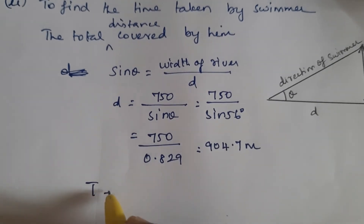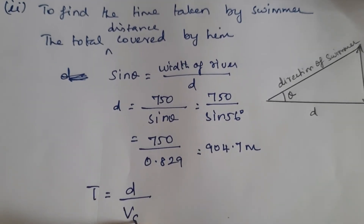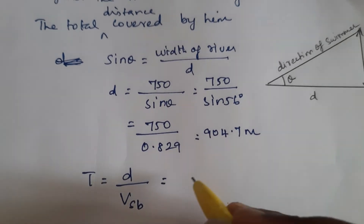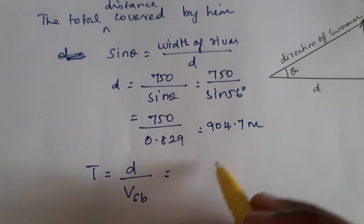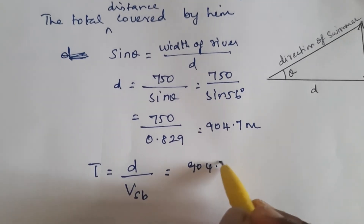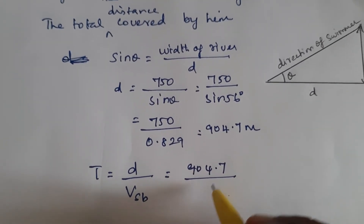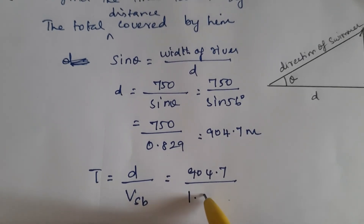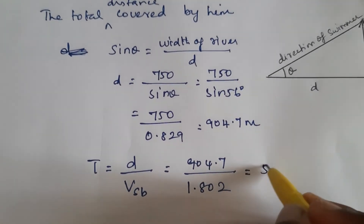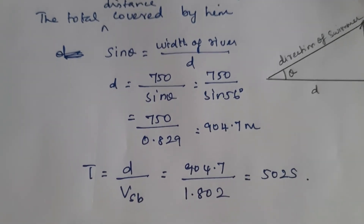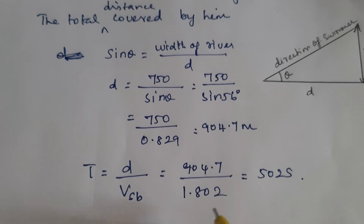Now we find the time. Time = distance / velocity of swimmer with respect to bank = 904.7 / 1.802 = 502 seconds. This is the time taken by the swimmer to cross the Cauvery River.